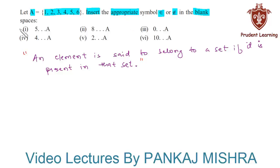Here we know that 5 is present in the given set, so we'll say that 5 belongs to A. And 8 is not present in the set, therefore we will say that it does not belong to the given set.